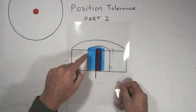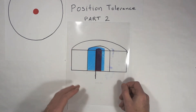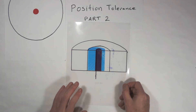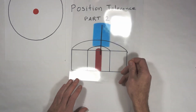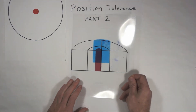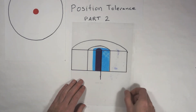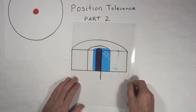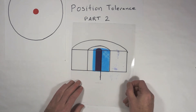We bring it in all the way on this side as far as we can, and it doesn't violate the boundary on that side either — that virtual condition boundary. Now that we have depth, it's not just the circle at the top.